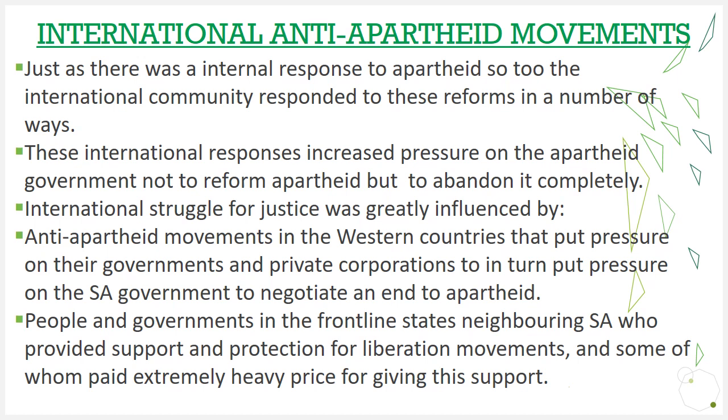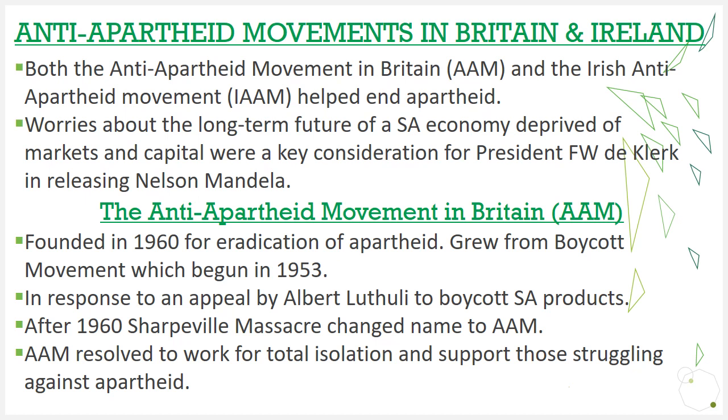People and governments in the frontline states neighboring South Africa provided support and protection for liberation movements, and some paid extremely heavy prices for giving their support. Zimbabwe, Mozambique, and Botswana had recently gotten their own independence, and this gave South African underground movements like the MK and APLA a sense of empowerment to end their own political struggle. So our neighboring countries helped a lot when it came to the ending of apartheid.